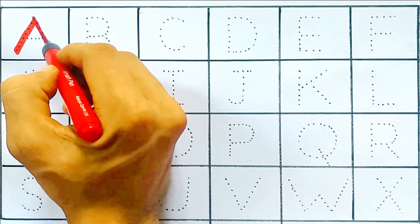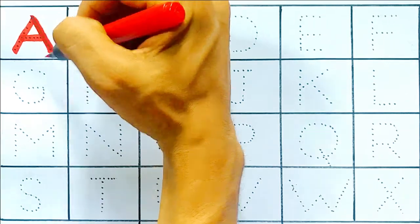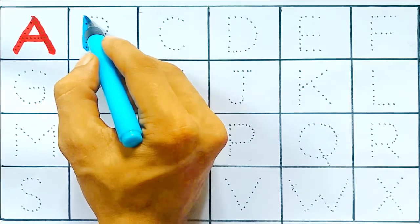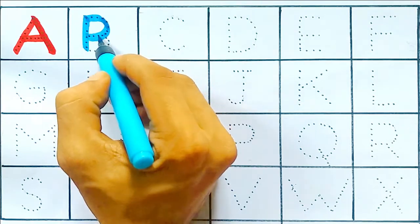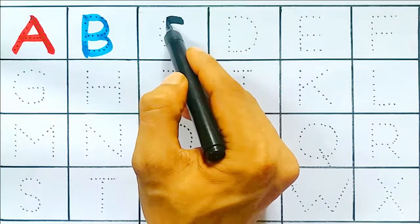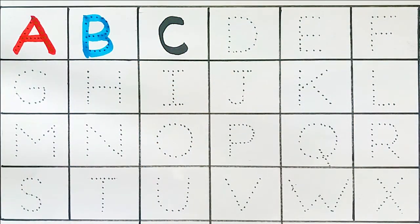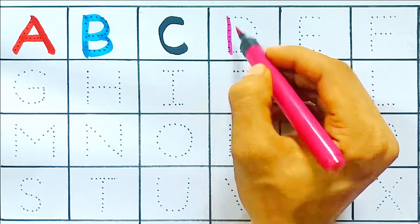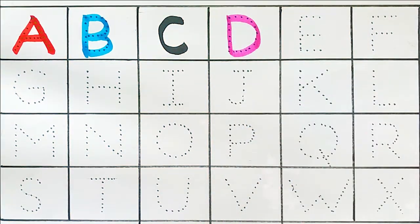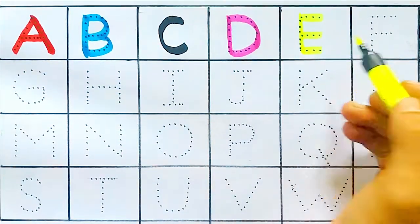A. A for Arm. B. B for Boo. C. C for Cart. D. D for Dear. E. E for Egg.